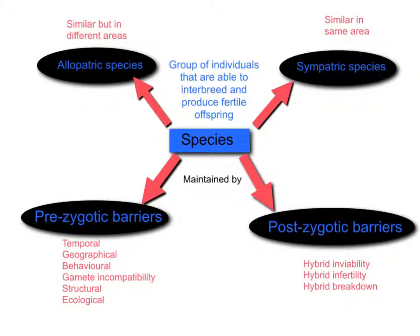The first factors we'll look at are the pre-zygotic barriers — barriers that prevent individuals from different species being able to breed with each other before a zygote is formed, so before the gametes fuse. The first is temporal isolation: the two species are active at different times of day or night. For example, a bird active during the day is not likely to breed with one active at night, simply because they cannot meet during the same period of time.